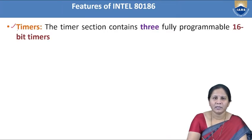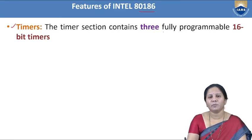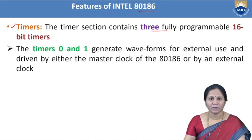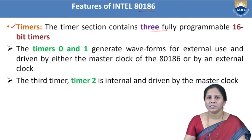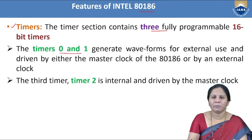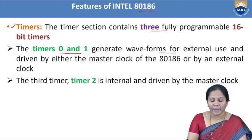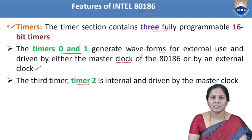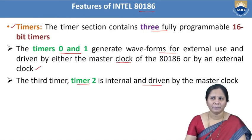The 80186 microprocessor consists of three programmable timers, each 16-bit: Timer 0, Timer 1, and Timer 2. Timer 0 and Timer 1 are used for generating waveforms externally and are driven by the master clock or an external clock. Timer 2 is internal and driven by the master clock only, with no external clock.